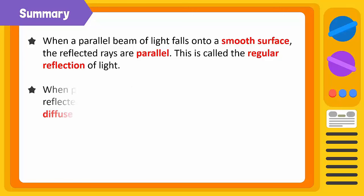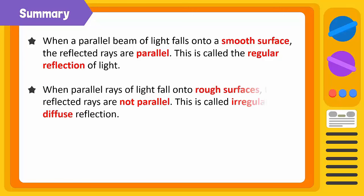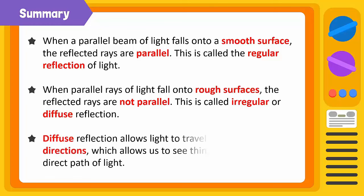When parallel rays of light fall onto rough surfaces, the reflected rays are not parallel. This is called irregular or diffused reflection. Diffused reflection allows light to travel in multiple directions, which allows us to see things that are not in the direct path of light.